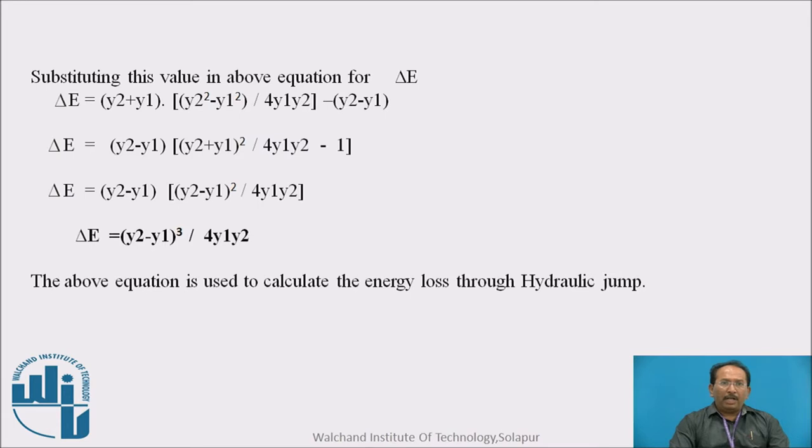Substituting this value in the above equation for loss of energy, we will get delta E is equal to y2 minus y1 bracket cube upon 4 y1 y2. This is the equation used to calculate the energy loss through hydraulic jump. The basic equation which we are using for this hydraulic jump is a momentum equation, not an energy equation, because considerable loss of energy takes place in a very small length. That is why we are taking the momentum equation and we have calculated that loss of energy is equal to y2 minus y1 bracket cube upon 4 y1 y2.